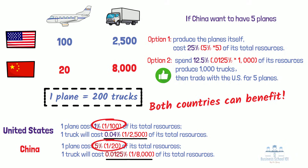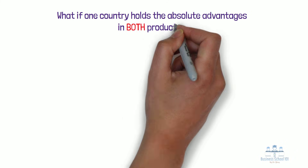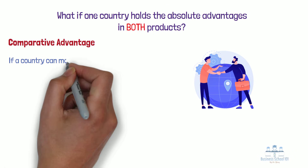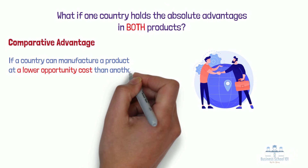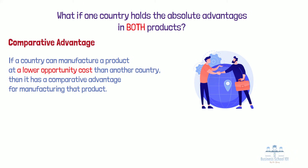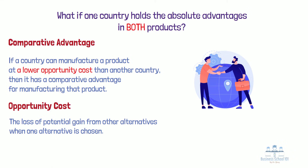However, this is not always the case in the real world. What if one country holds the absolute advantage in both products? Will that country still be able to benefit from trading with other countries? To answer these questions, we need to understand another important term: the comparative advantage. By definition, if a country can manufacture a product at a lower opportunity cost than another country, then it has a comparative advantage for manufacturing that product. Opportunity cost refers to the loss of potential gain from other alternatives when one alternative is chosen.